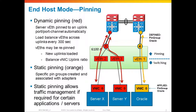Now, if uplink number one were to fail here and there were no other uplinks available for dynamic pinning, then we will use uplink number four for the other systems as a fallback. So as long as there are uplinks available for dynamic pinning, those will be used. But if none are left because they've all failed, and if there's an uplink available that has been defined for static pinning, that will also be used for the servers that were using dynamic pinning.